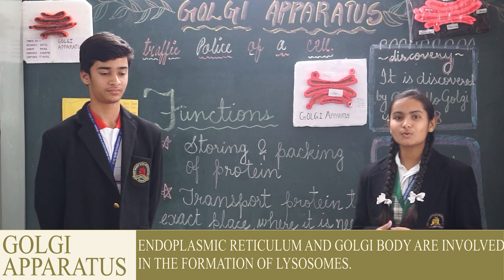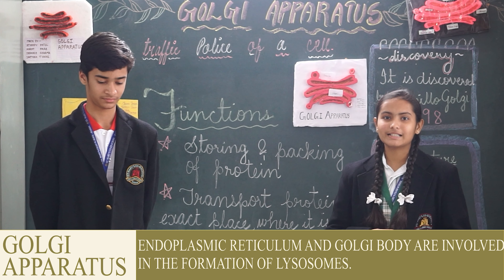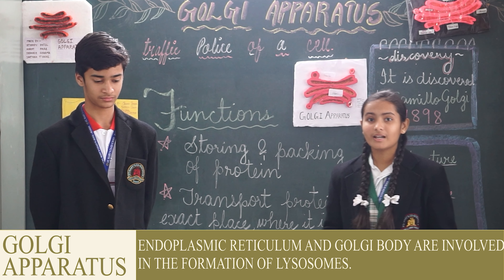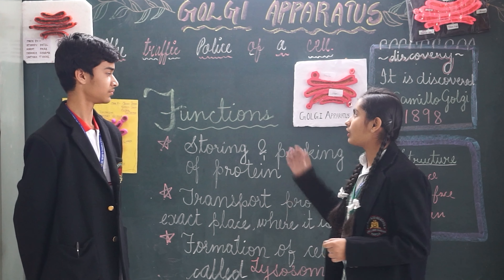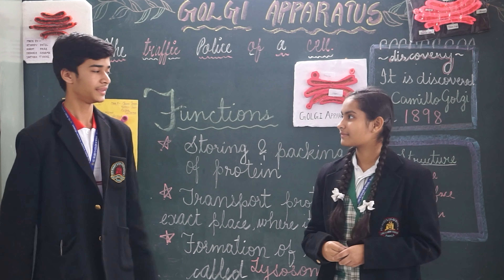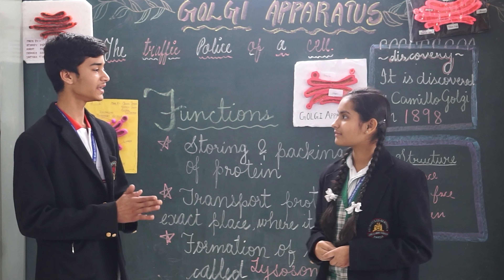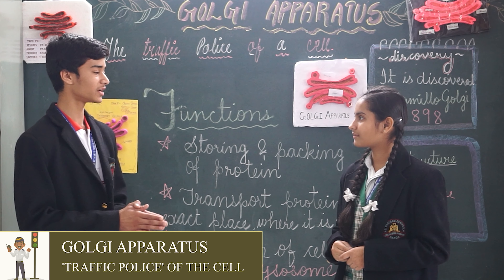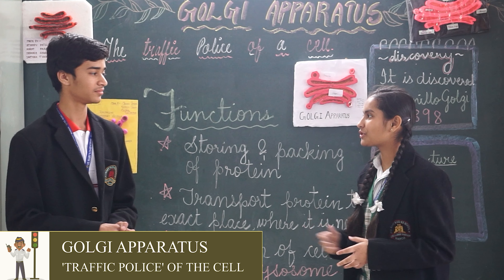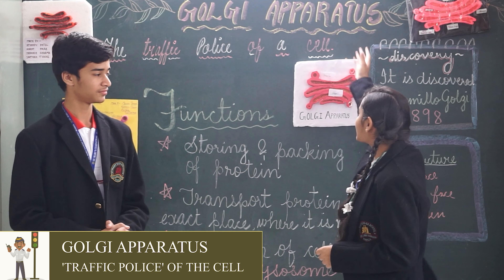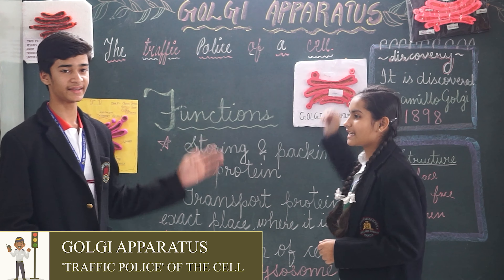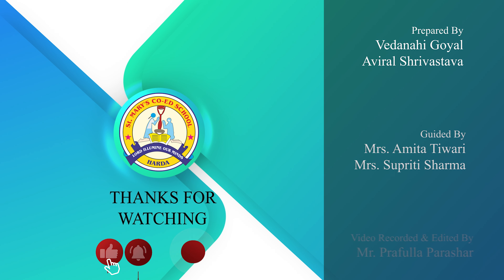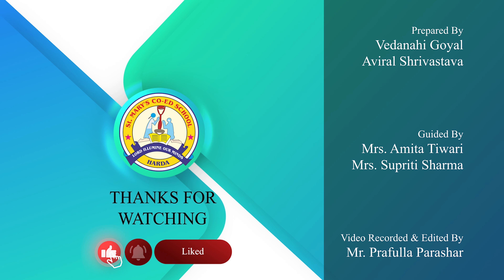Aviral, now will you explain the main functions of Golgi apparatus for us? Yes, sure. It packages the proteins received from the endoplasmic reticulum. After packaging, it transports the protein to where it is needed the most. That is why it is called the Traffic Police of a Cell. It also has a role in the formation of a new cell organelle — the lysosome. Lysosomes are formed when vesicles bud off from the Golgi body.